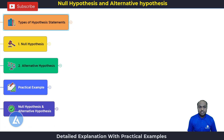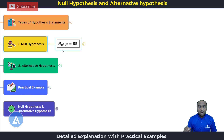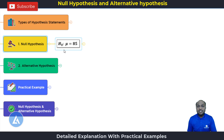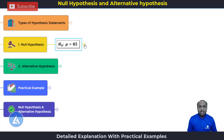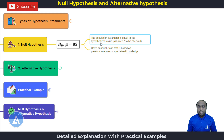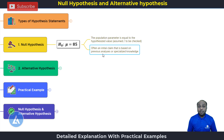The first one is null hypothesis. It is expressed as H0, and the expression will look like this: H0 colon mu is equal to 85. The meaning of this statement is the population parameter is equal to the hypothesis value. This hypothesis value is the value that we have assumed or that we are going to check. This is often an initial claim based on previous analysis or subject matter expert knowledge.